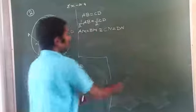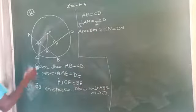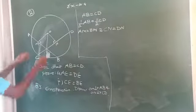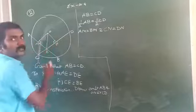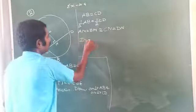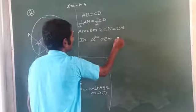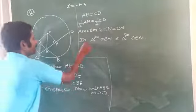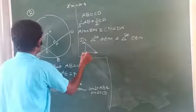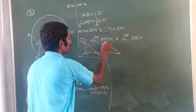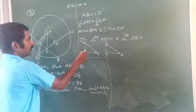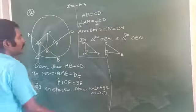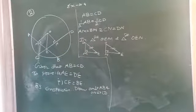Now we will consider two triangles: triangle OEM and triangle OEN. We will try to prove these two triangles congruent. Since OM is perpendicular to AB and ON is perpendicular to CD, angle OME and angle ONE are 90 degrees each.